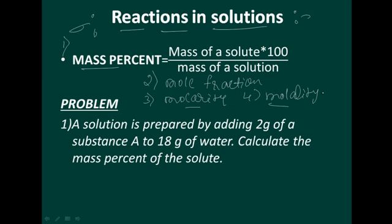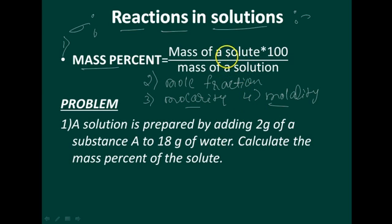First, consider mass percent. Mass percent is obtained by using the following formula: mass percent is equal to mass of solute multiplied by 100, divided by mass of solution. Just remember this formula.